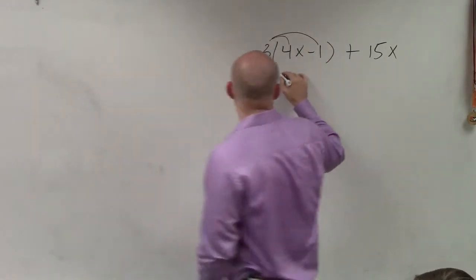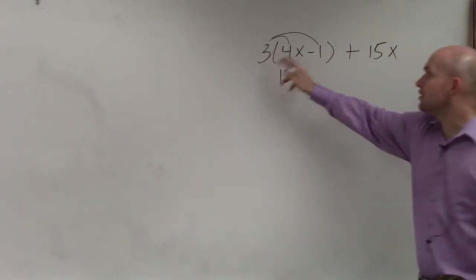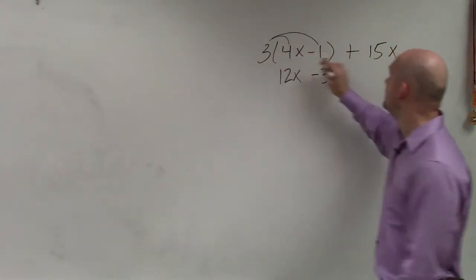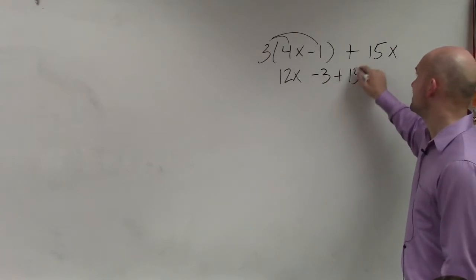3 times 4x is going to be 12x. 3 times negative 1 is negative 3. And then I have this positive 15x.